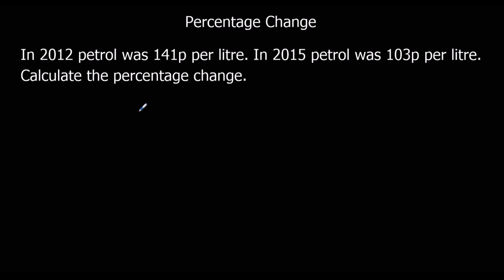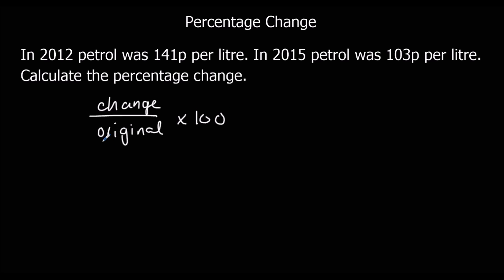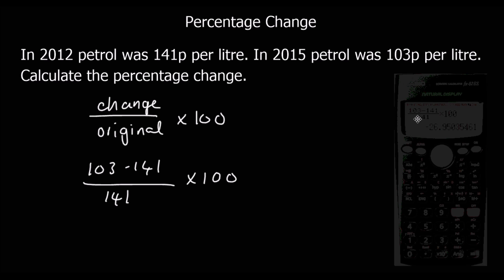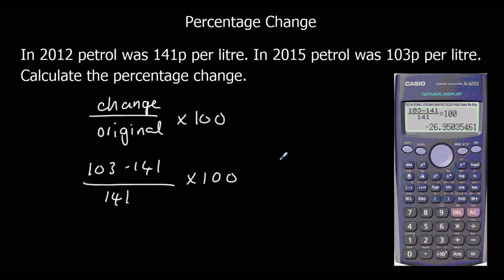Here's another example. Petrol was 141, now it's 103. What's the change? Same formula: change over original times 100. So the change is 103 minus 141, over 141, times 100. If you wrote the top line the other way around, you'd get the same answer but positive, not negative. In this example, it's minus 26.95%, which to one decimal place is minus 27.0%.